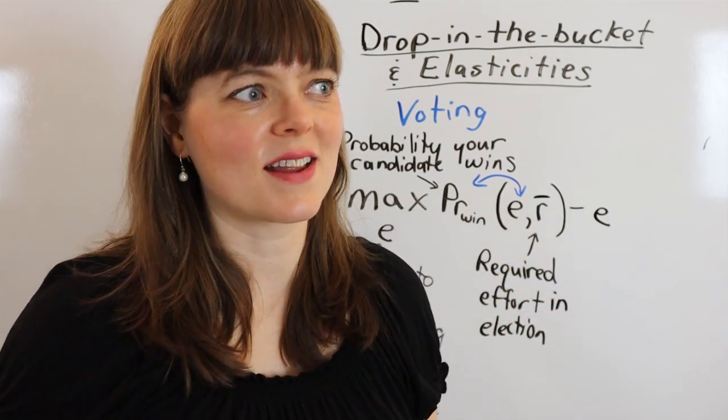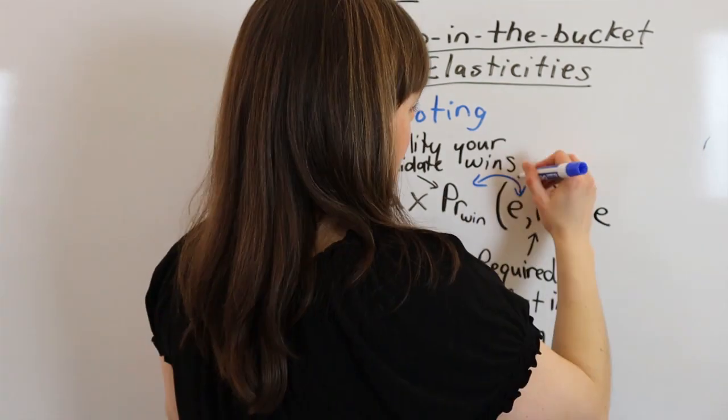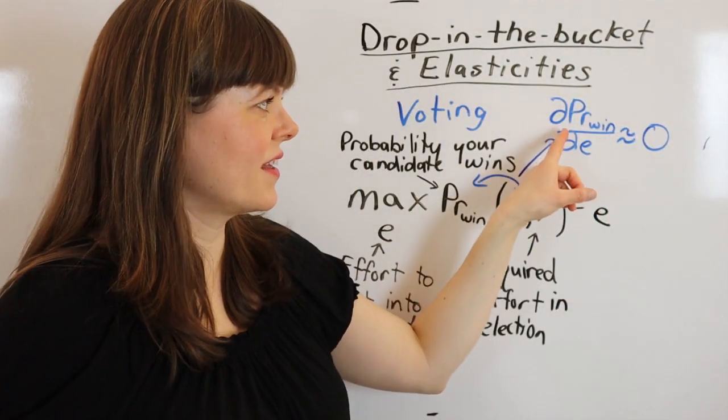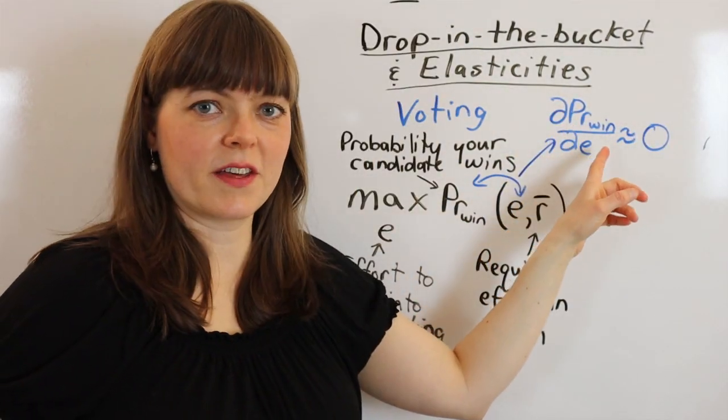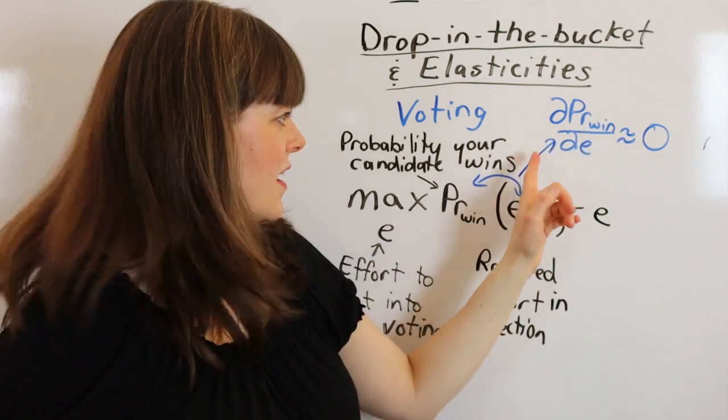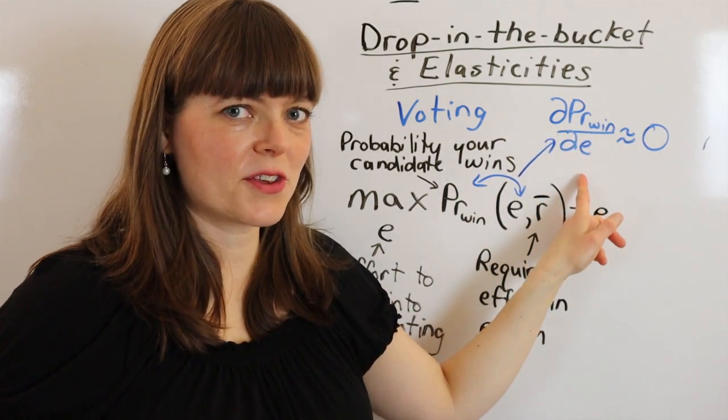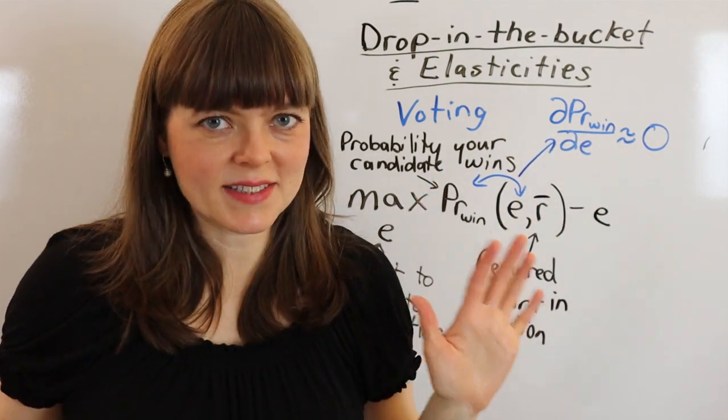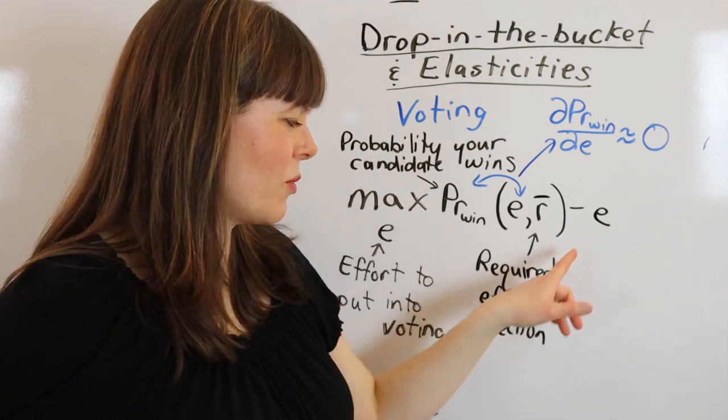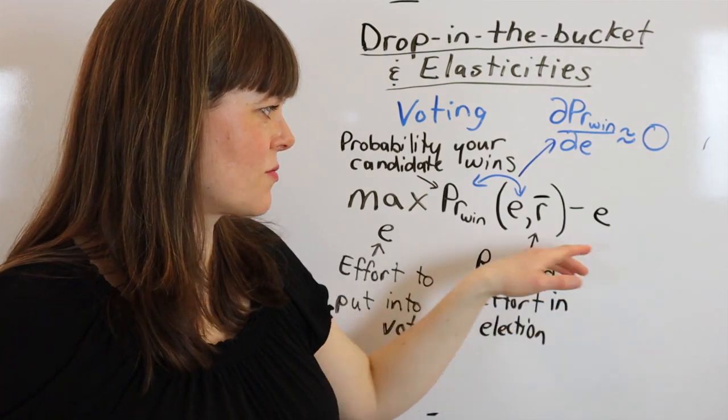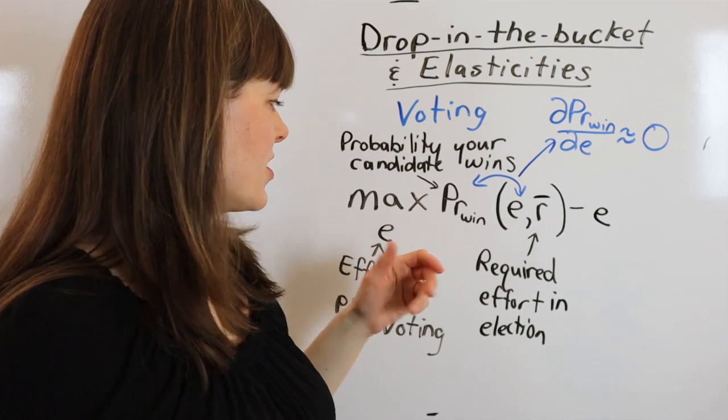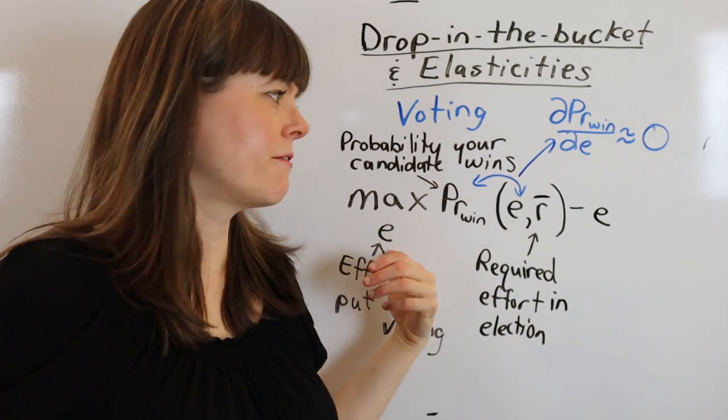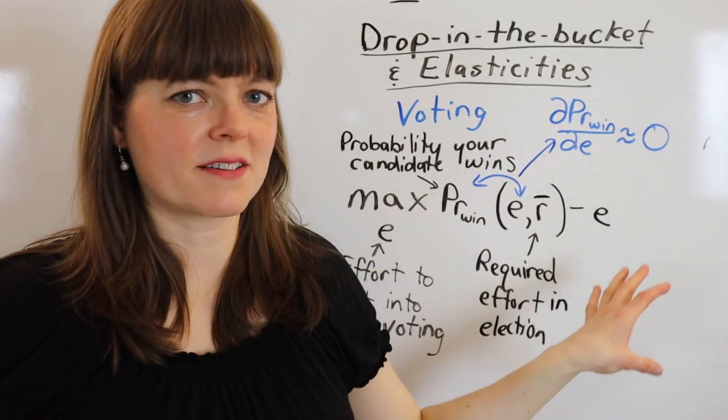So first of all, let me write that out in calculus language. The elasticity of the probability that your candidate wins with respect to the effort that you put into your vote is basically zero. In which case, it's really hard to get a situation where the person actually votes if this is their objective function.